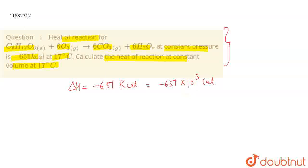Now, this is constant pressure. We know that it is delta H. You have to find the heat of reaction at constant volume, which is delta U as per the question.